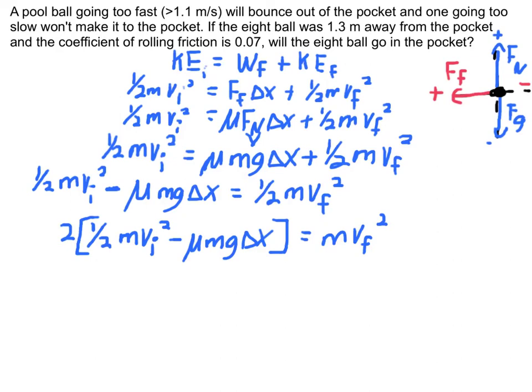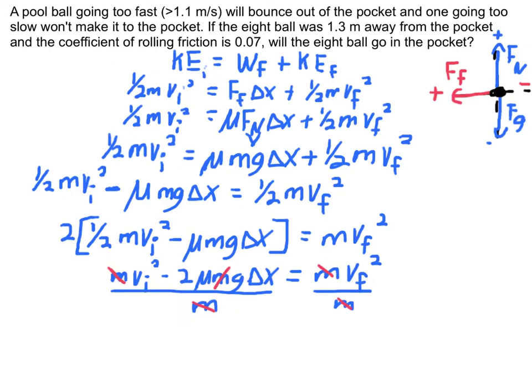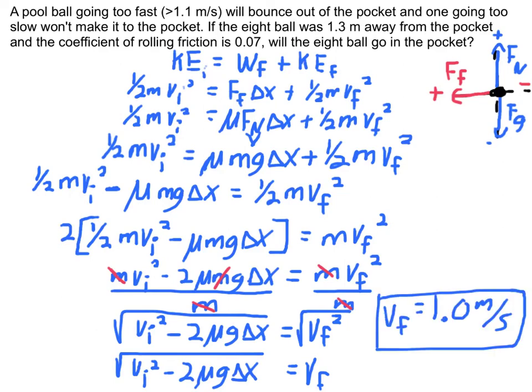So I subtracted my mu mg delta x to the other side, multiplied both sides by 2 to get rid of the 1 half. And I'm actually going to in the next step distribute my 2 here to make life a little bit easier, not having to have the parentheses. Divide by m, take the square root. And you'll notice here, since m is in every term, the m actually cancels out. And once I substitute in all my numbers, I come out with a final velocity of 1.0 meters per second.